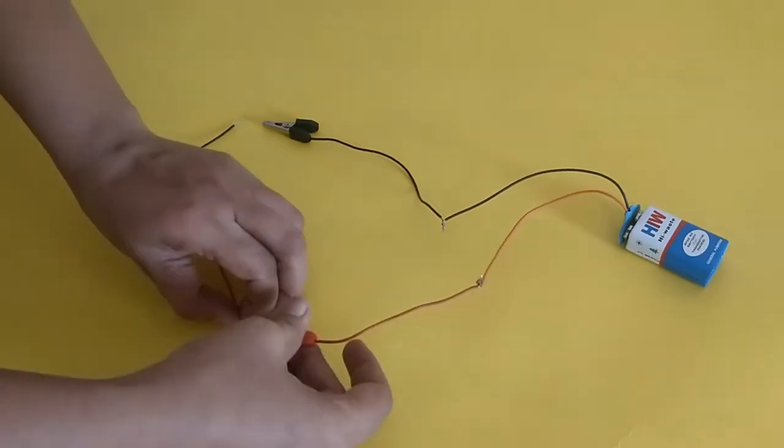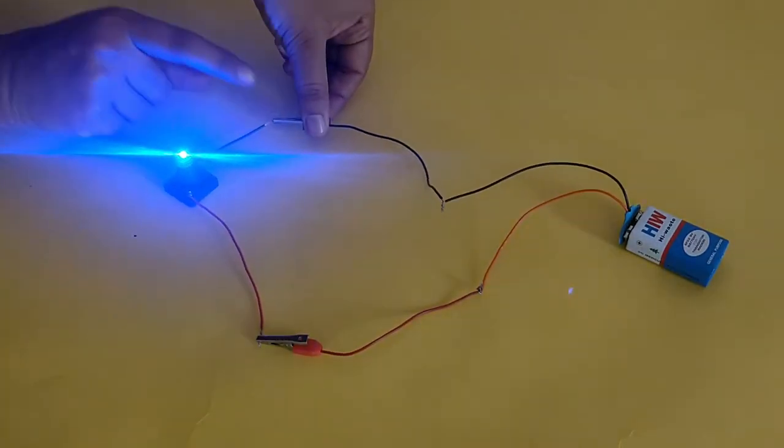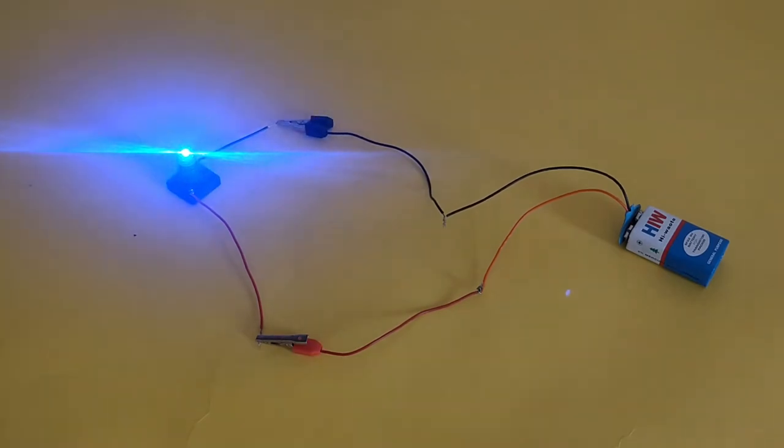Connect the crocodile clips from the battery snap to the lead wires from the torch bulb mount. You will see that the torch bulb is now glowing.